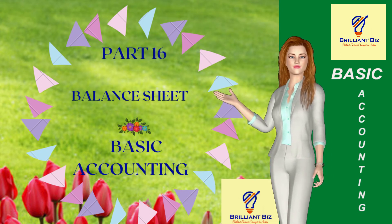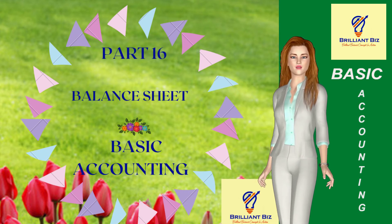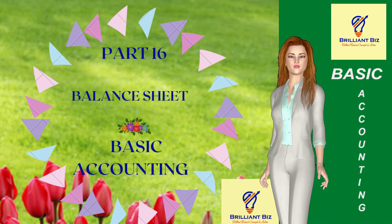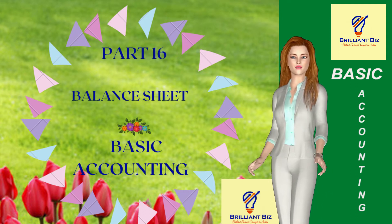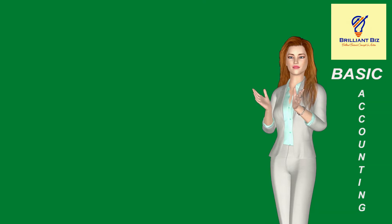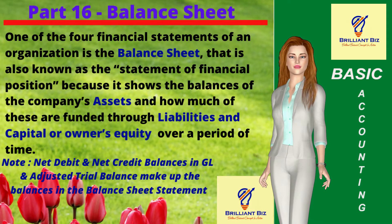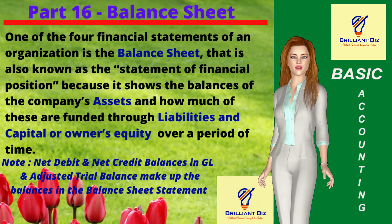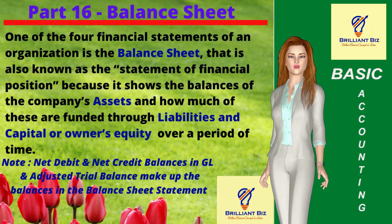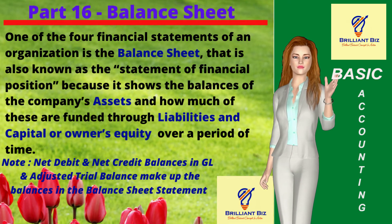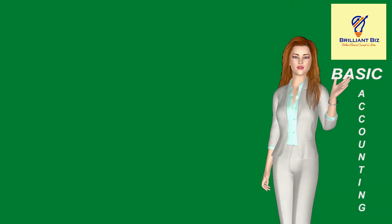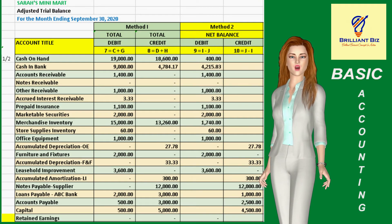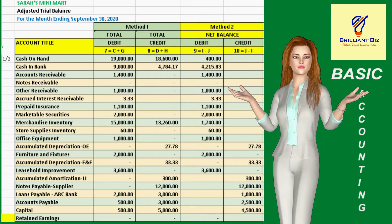In this episode, we shall discuss the balance sheet and show you an example which is that of Sarah's Mini Mart, based on the adjusted trial balance which we prepared previously. One of the four financial statements of an organization is the balance sheet, also known as the statement of financial position, because it shows the balances of the company's assets and how much of these are funded through liabilities and capital or owner's equity over a period of time. The balances that make up the balance sheet are those that make up the adjusted trial balance and the general ledger, both of which should tally with each other.